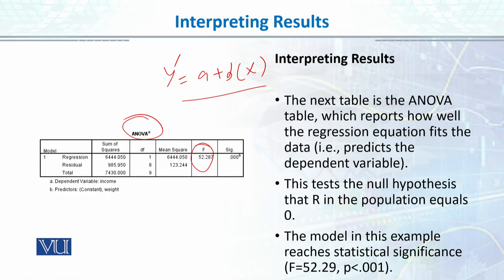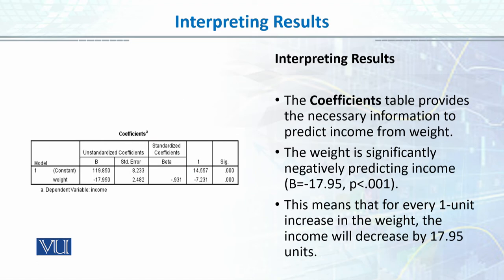In this example, the model reaches statistical significance with F equal to 52, which is a highly significant value. This means our model — where we use weight as the predictor to predict income — is significant and better than the null model. Our third table is the coefficients table, which is very important because it explains how much variance each predictor explains.